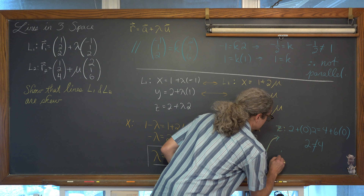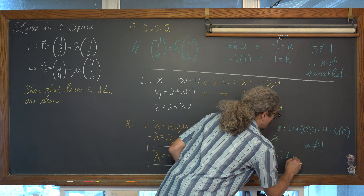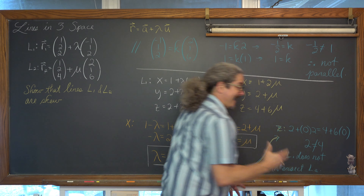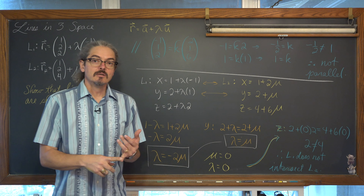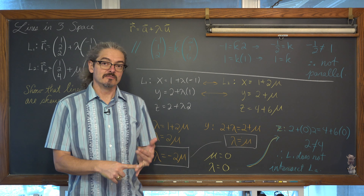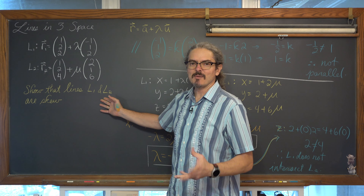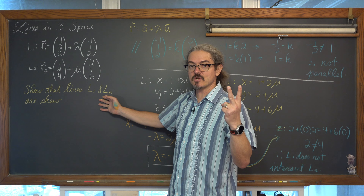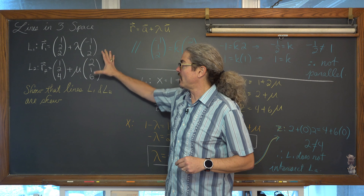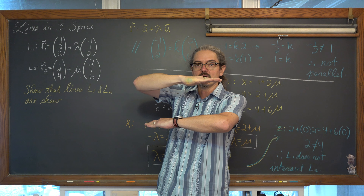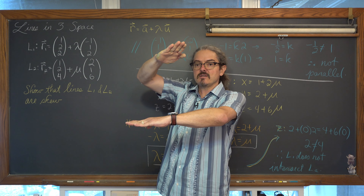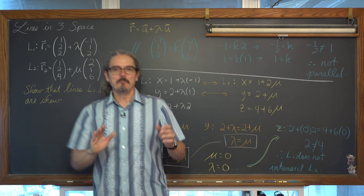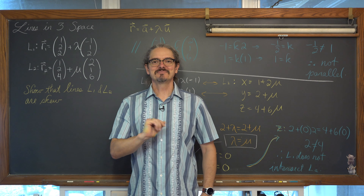Therefore, line 1 does not intersect line 2, and line 1 and line 2 are not parallel. We have shown through the two checks that these two lines are indeed skew: they're not parallel, and they do not intersect, so they have to be skew. I'm Mr. Tarrou. BAM! Go to your homework!